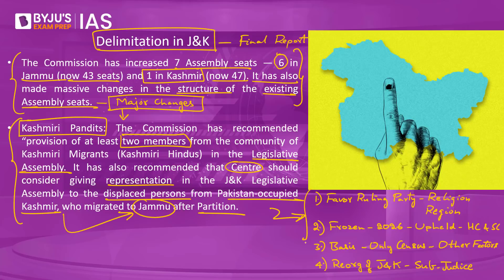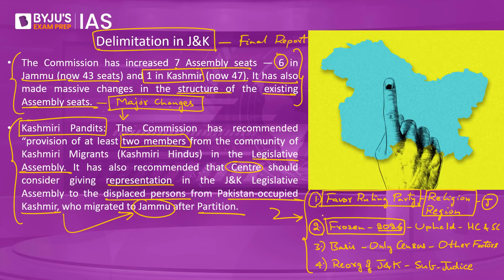These changes have attracted significant controversy and strong opposition from several political parties. The controversy rests on four grounds. First, there are allegations that the delimitation deliberately favors the ruling party at the center, as it is seen to promote religion and region-based voting by giving more preference to the Jammu region over Kashmir. Second, the J&K assembly had frozen delimitation until 2026, just like the rest of India, and this freeze was upheld by the High Court and the Supreme Court. By carrying out delimitation before 2026, critics argue the government has breached court orders, making the exercise illegal and unconstitutional.